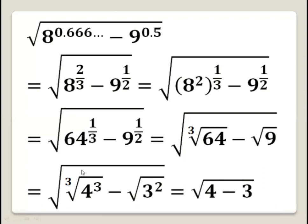Here we can cancel out the cube and the cubic root, so this number is 4. And we can cancel the square root and the square, so this number is 3.